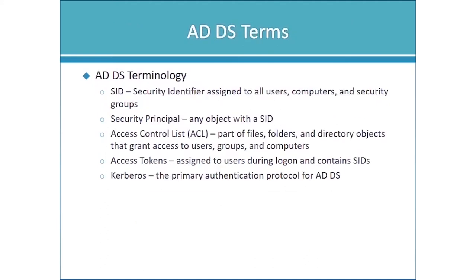Let's go back through some key terms. A SID — an object SID — is a Security Identifier. Every user, every computer, every security group, service account — every object created in Active Directory has an object SID. That object SID is made up of two parts: the domain SID and a relative identifier, which uniquely identifies that object. Collectively, the two are just referred to as the SID.